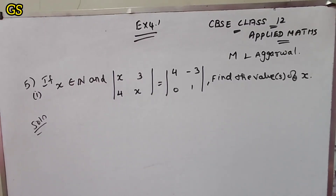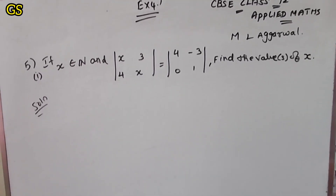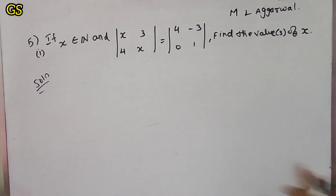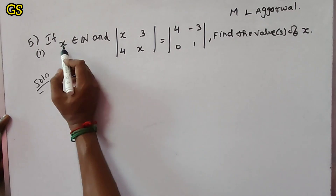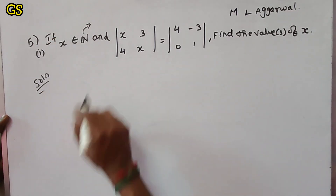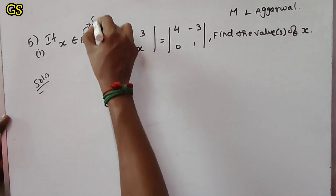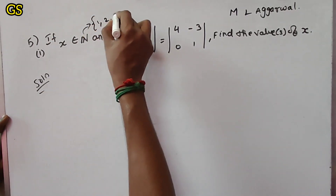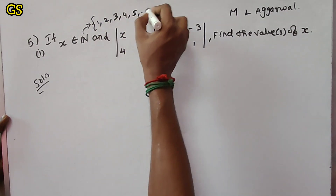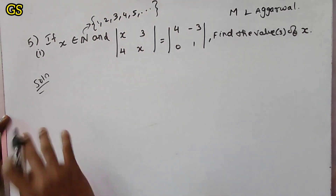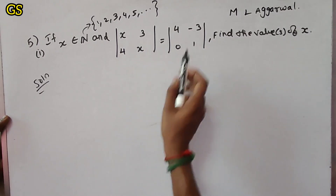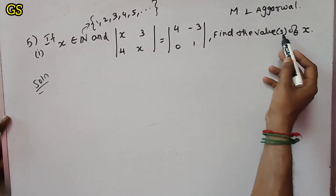Hi friends, welcome to CBC class. We apply the maximum of x plus solution for problem number 4.1, the first additional solution. x belongs to natural numbers. Natural numbers are 1, 2, 3, 4 — this is N. So now we solve to find the value of x.